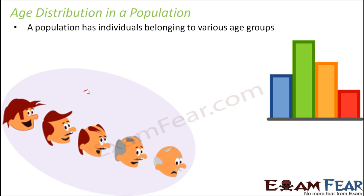Since a population has individuals belonging to various age groups, we define age distribution like this: for example, there are 100 individuals who belong to the age group of less than 10 years, there are 200 individuals in the age group of 20 to 40 years, and there are 150 individuals in the age group of 40 to 60 years. That's how we define age distribution in a population.